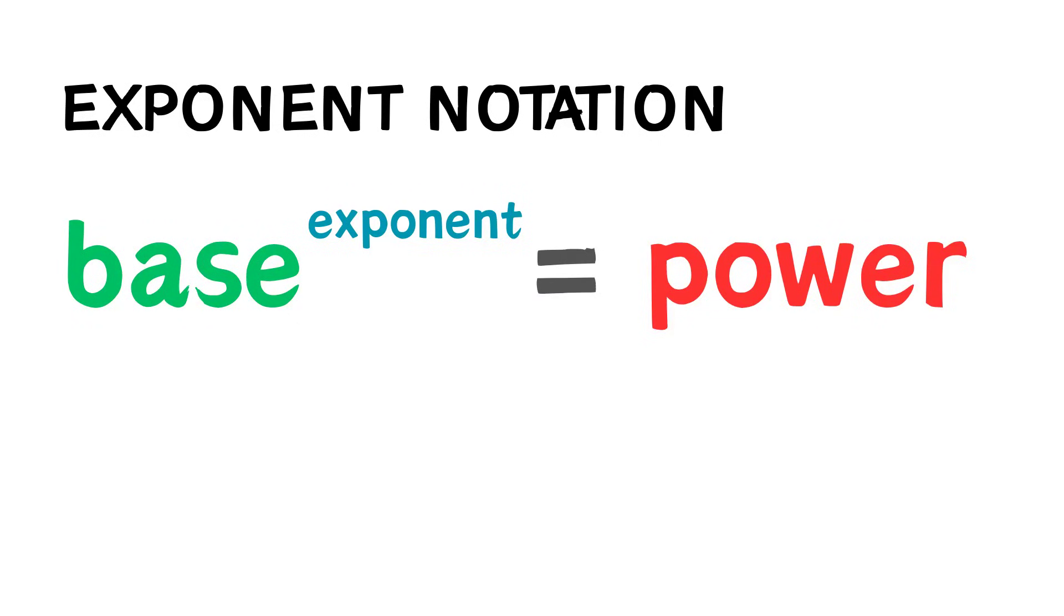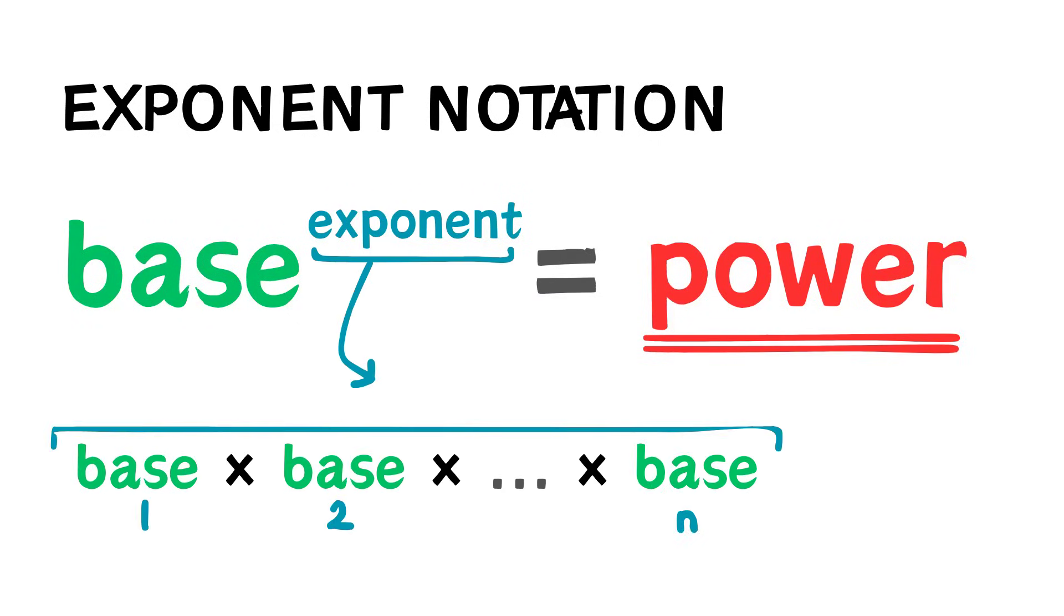You know that in exponent notation, we are trying to find the power. The exponent tells us how many times we are multiplying the base together. The result is called the value, or the power, of the base.